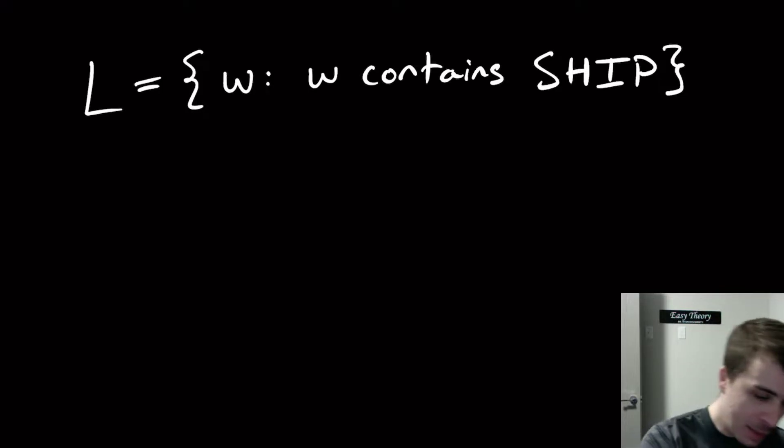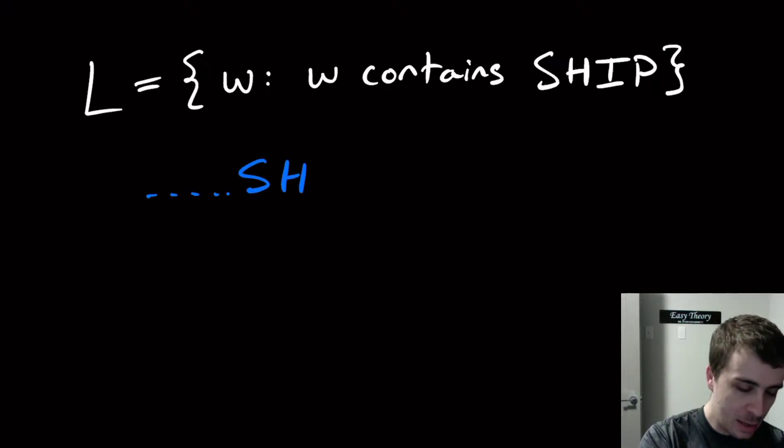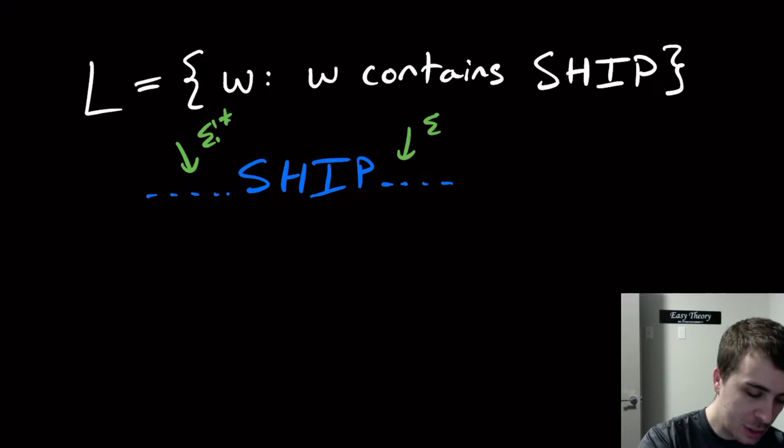The way to think about this is to say we have anything that can happen before the occurrence of the word SHIP, and then the word SHIP, and then anything can go after that. So we could just write this as Sigma star beforehand and Sigma star after the fact. If we wanted a regex for this, we can write Sigma star SHIP Sigma star.